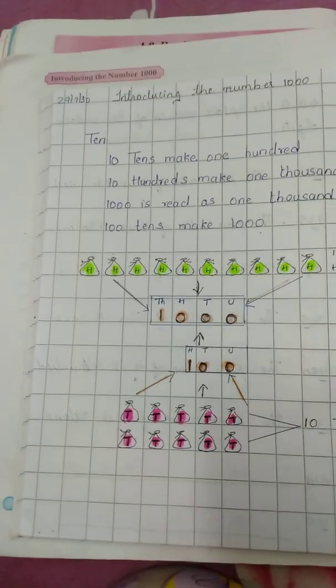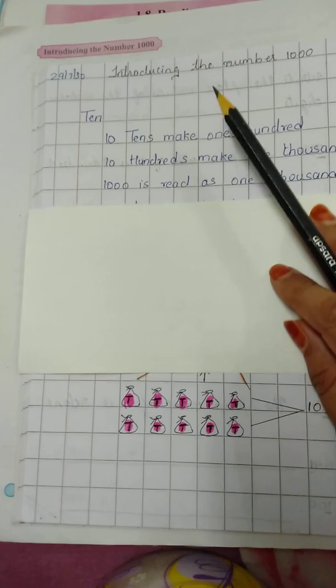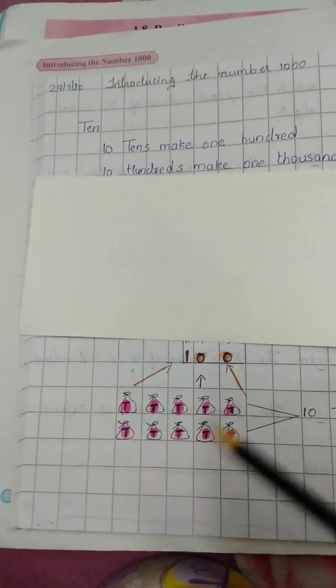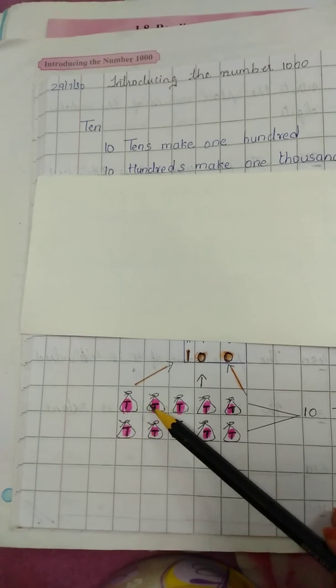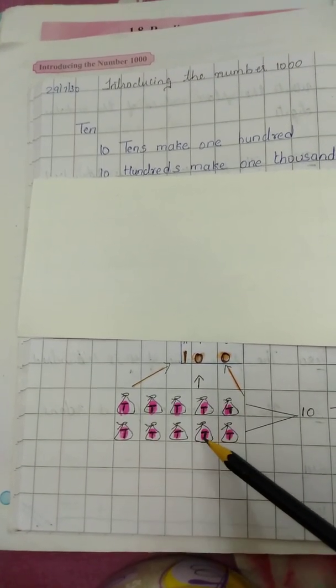Now see here. What makes 100? It is 10 tens. See, count: 1, 2, 3, 4, 5, 6, 7, 8, 9, 10. These are 10 pockets.